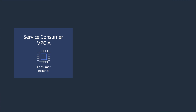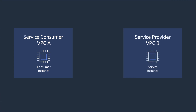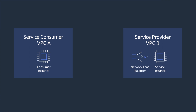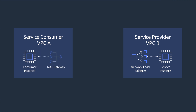Here is a typical environment. We have a consumer application service running in VPC A. It connects to a dependent source service deployed in another AWS account in VPC B. The service provider in VPC B is a shared service with an API accessible through the internet, through a load balancer endpoint. The consumer service routes a request through the NAT gateway, to the internet gateway, IGW, and to the external service.